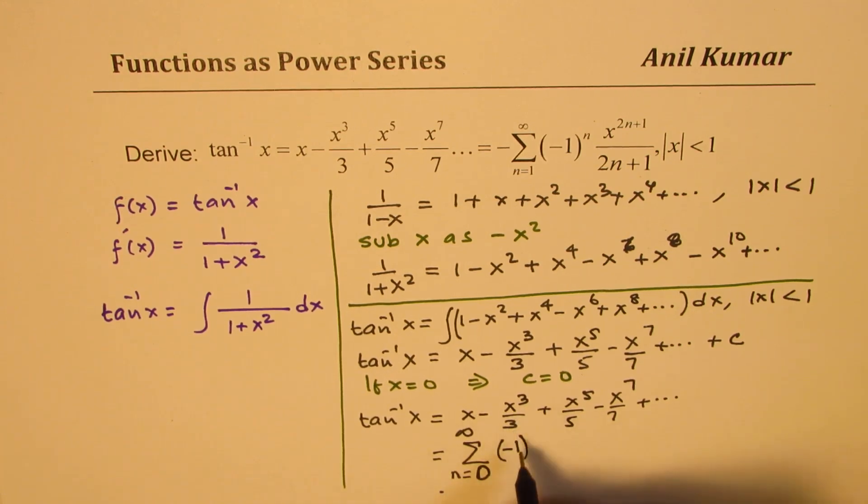And then when I take this as two, I'll get that negative power. So I could write this as minus one to the power of n, and here the exponent x is 2n, so n is zero we want one here, so 2n plus one, over the 2n plus one in the denominator.